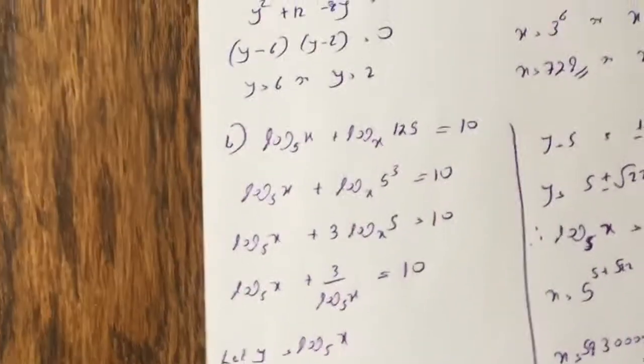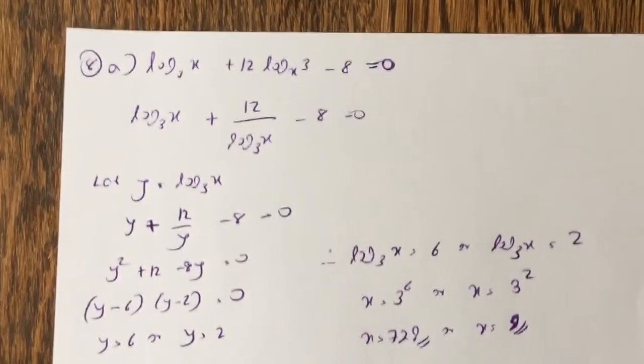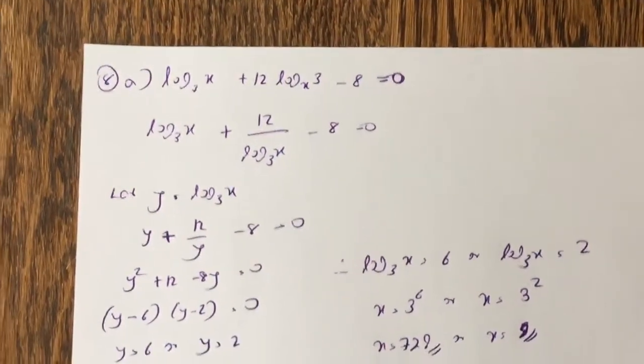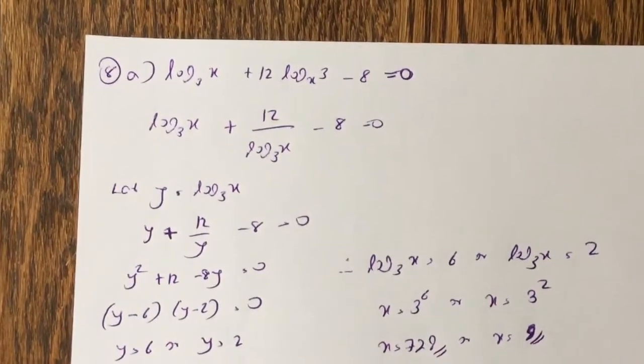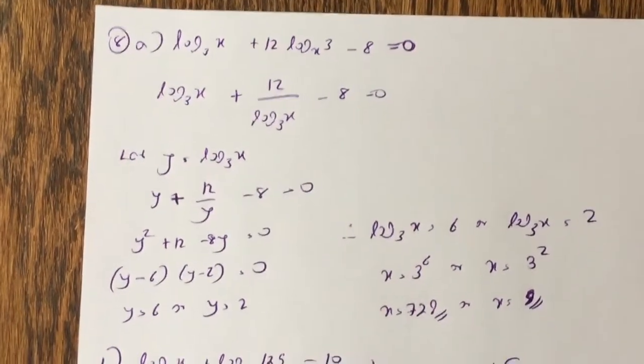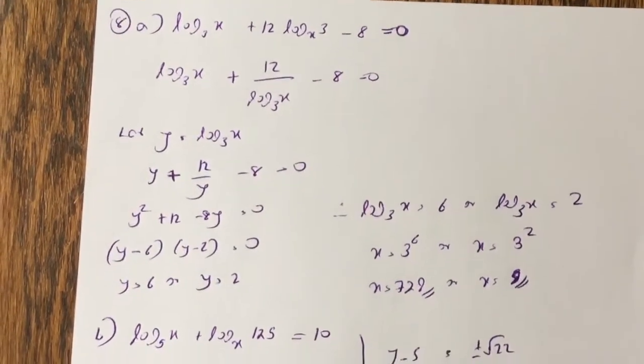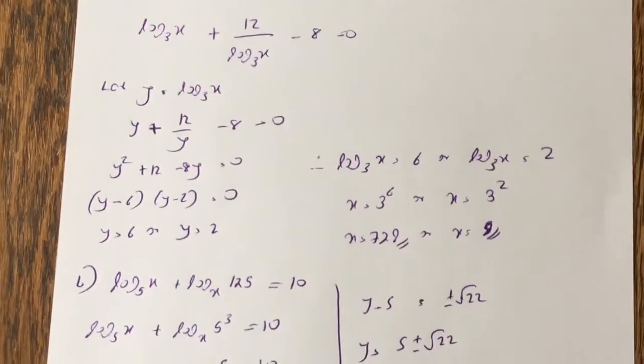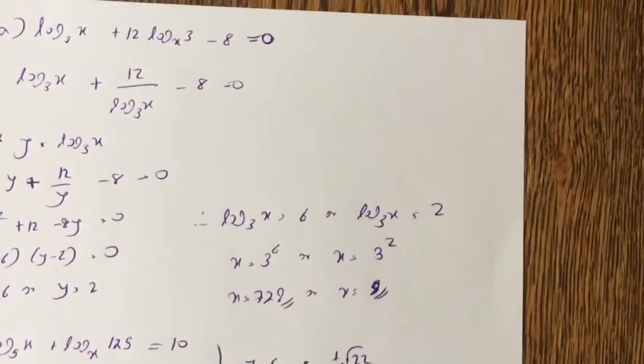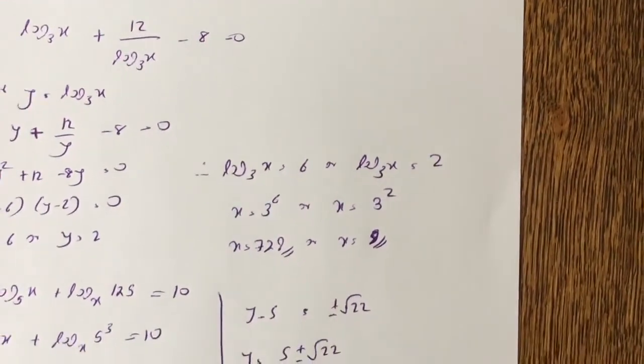Okay, we've got question 8 now. So we have log base 3 of x plus 12 log 3 of x of 3 minus 8 equal to 0, so using the change of base law, that becomes log 3 of x plus 12 log 3 of x minus 8, so we let y because log base 3 of x is y plus 12 over y minus 8 equal to 0, so you just multiply that by y, you get a quadratic, you factorize it, you get y equals 6, or y equals 2, which means log base 3 of x equal to 6, or log base 3 of x equal to 2, so x equal to 3 to the 6, or x equals to 3 to the 2, so x equals 729, or x equals 9.